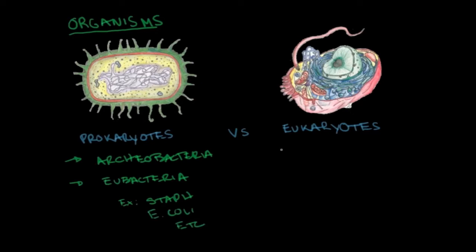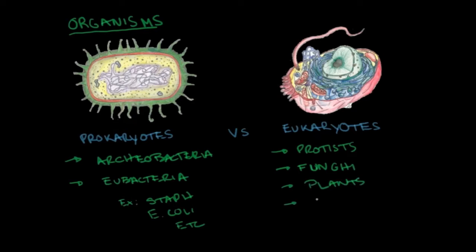Eukaryotes are found in both unicellular and multicellular organisms, such as protists, fungi, plants, and of course animals — which includes humans. So humans are comprised of eukaryotic cells.